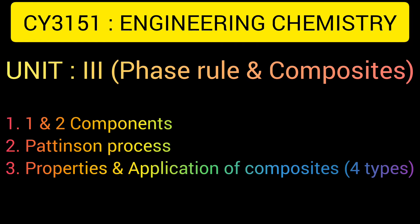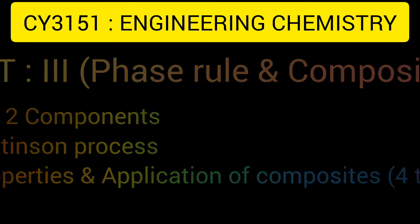The first question is unit 3. There are 4 types: metal matrix, ceramics, and polymers. If you want to see the properties, you can see the property and preparation. If you want to see the unit, there are 4 types.